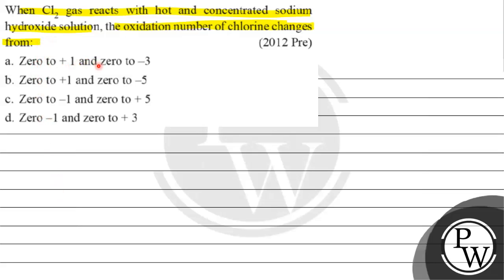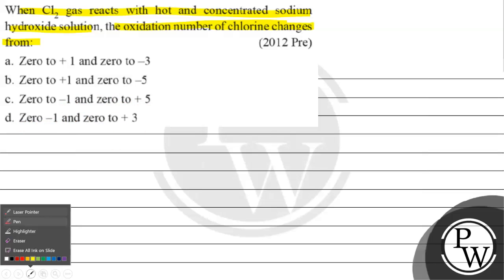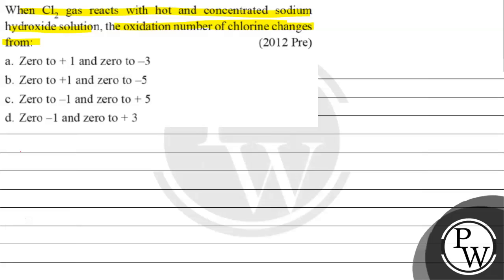Option A: 0 to +1 and 0 to -3. Option B: 0 to +1 and 0 to -5. Option C: 0 to -1 and 0 to +5. Option D: 0 to -1 and 0 to +3.